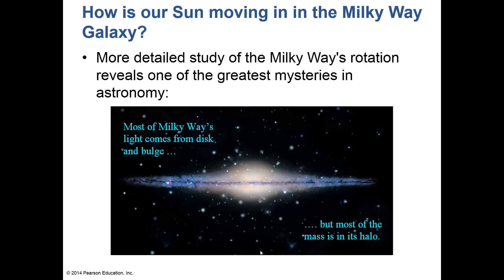The Milky Way's light comes from a disk and a bulge, and there is dust in the galaxy. You can see a dark band going through the middle — that is dust and gas, and that material makes up stars.